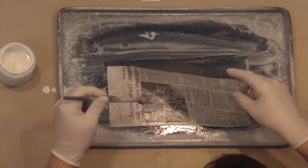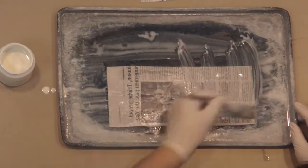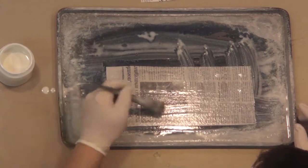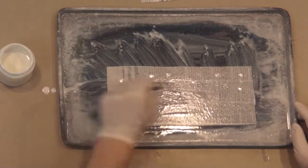Use your brush to lift the newsprint and flip it. Then saturate the other side with makigami rolling solution. Use your brush to remove any trapped air bubbles under the newsprint.